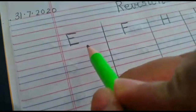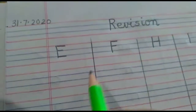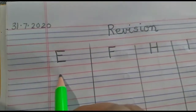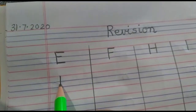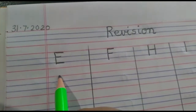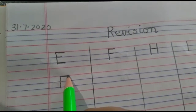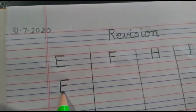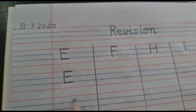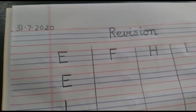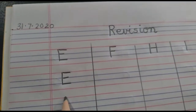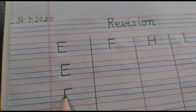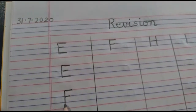Let's start writing. First we write capital letter E. We make a standing line from red line to blue line, then one sleeping line, a second sleeping line, and a third sleeping line — letter E. Again: standing line, sleeping line, sleeping line, sleeping line — E.